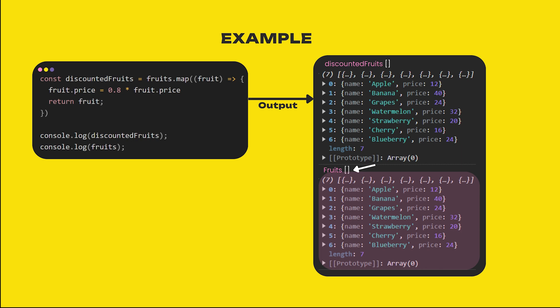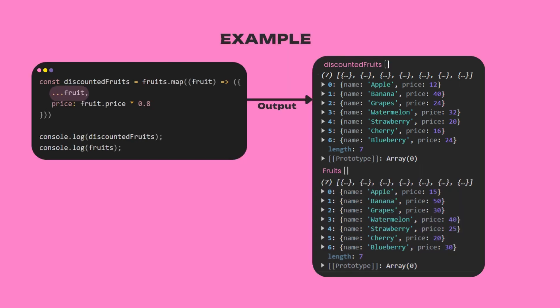Unless you intentionally want the original array to also be updated, you should always return a new object from the callback. So instead of mutating fruit.price directly, return a new object by spreading the properties of fruit and overriding the price: { ...fruit, price: 0.8 * fruit.price }. Now only discountedFruits will have the new discounted price, while fruits remains unchanged.